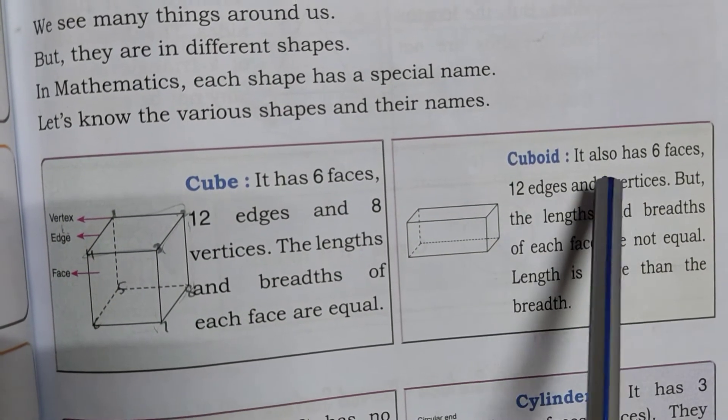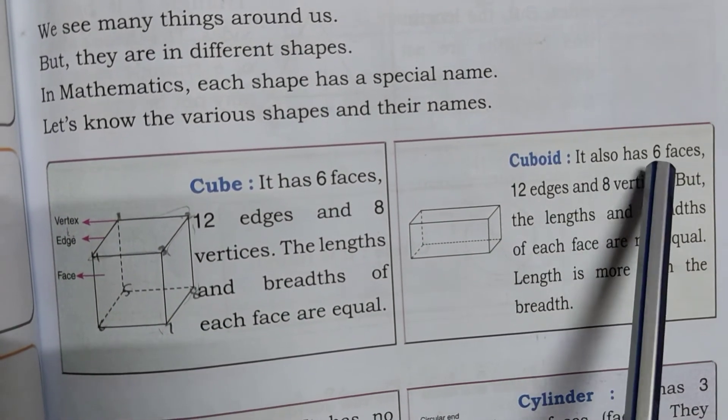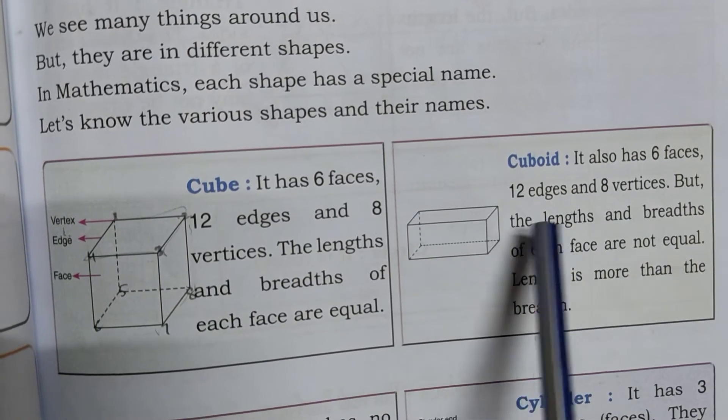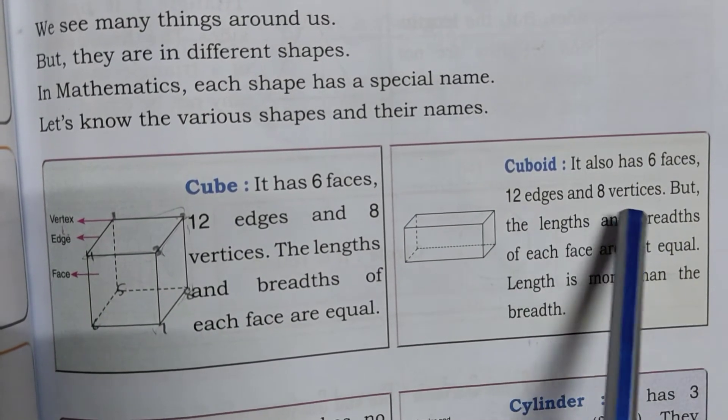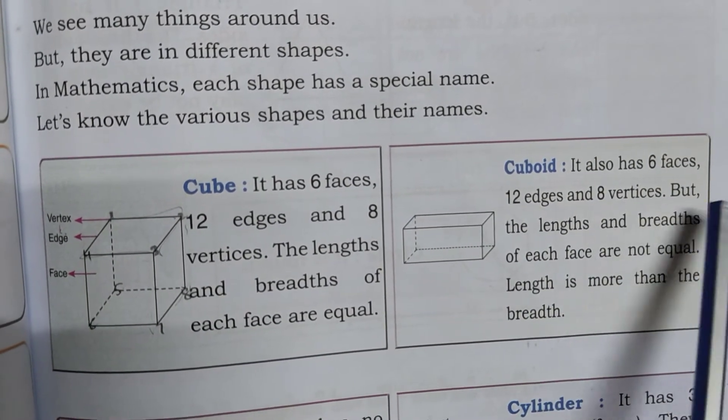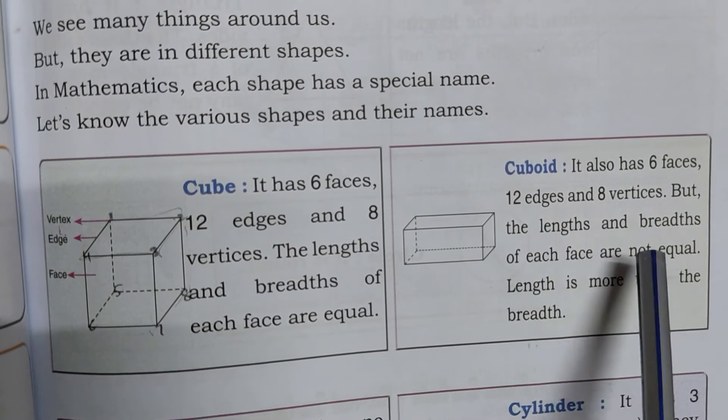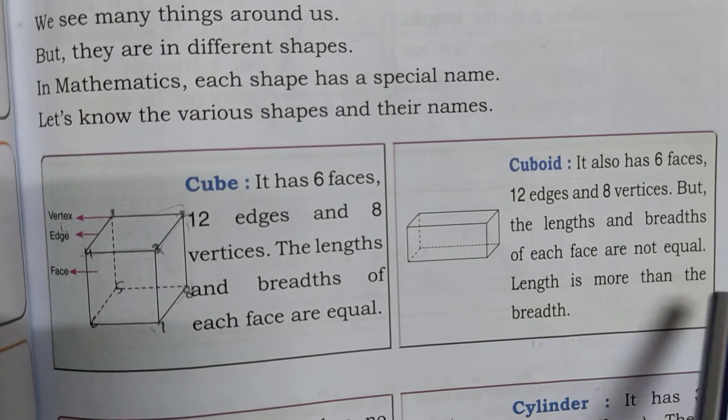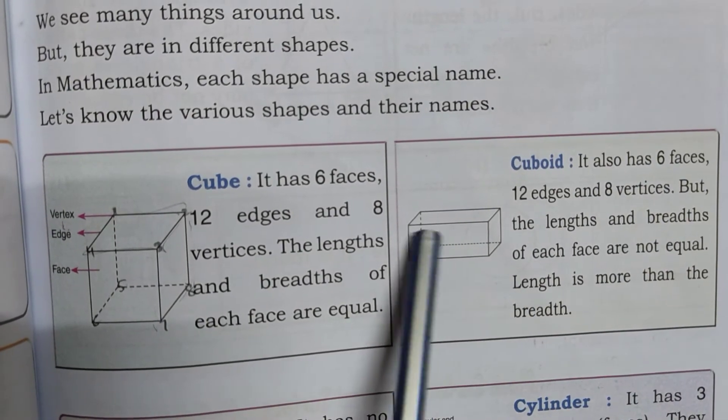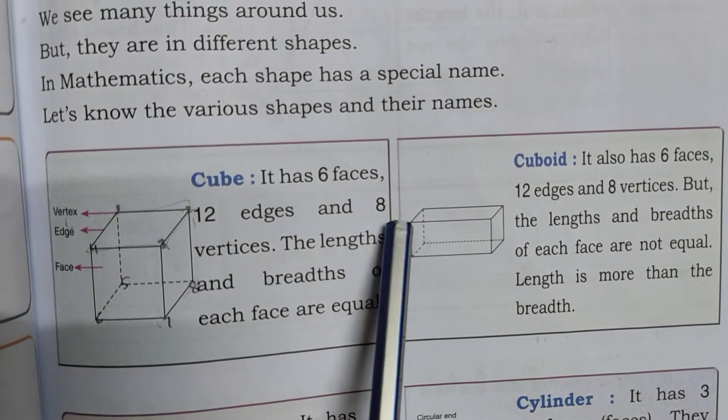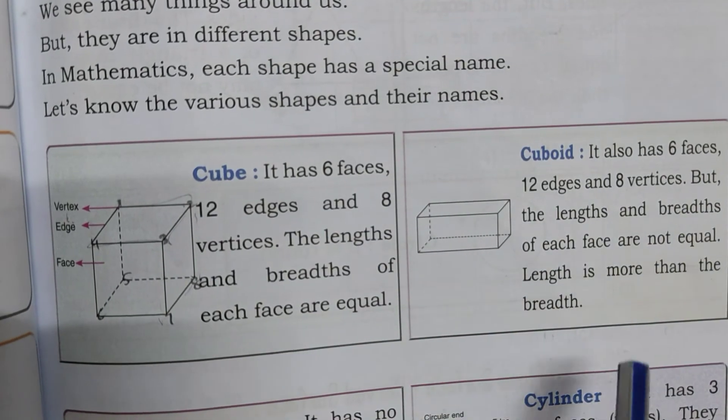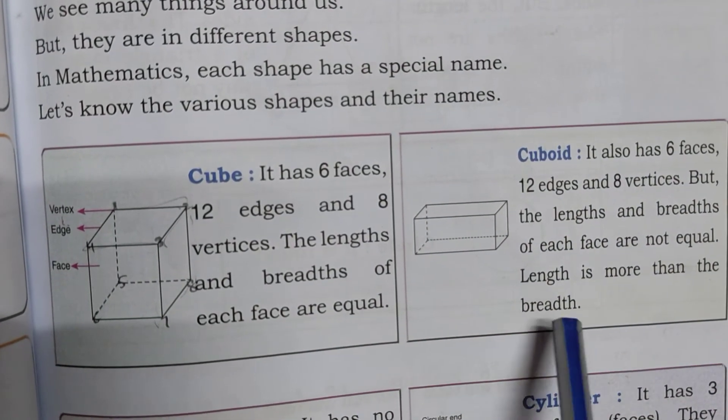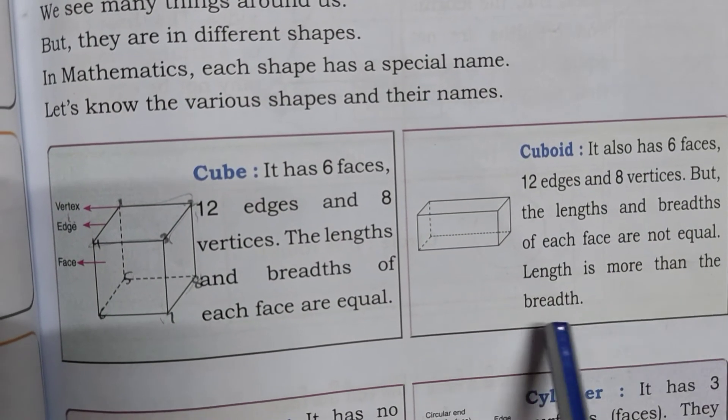A cuboid also has 6 faces, 12 edges, and 8 vertices. But the length and breadth of each face are not equal. You can see in the picture that the length and breadth are not equal. The length is more than the breadth.